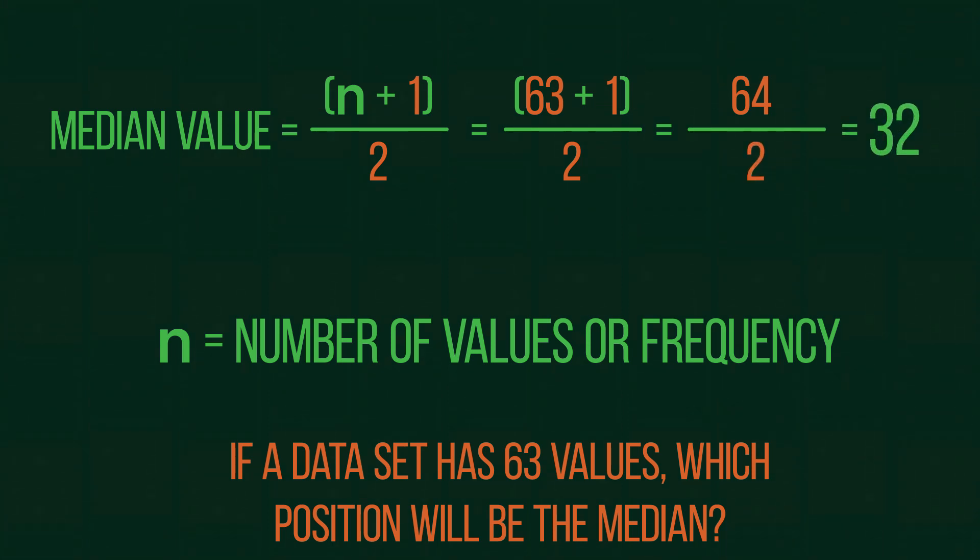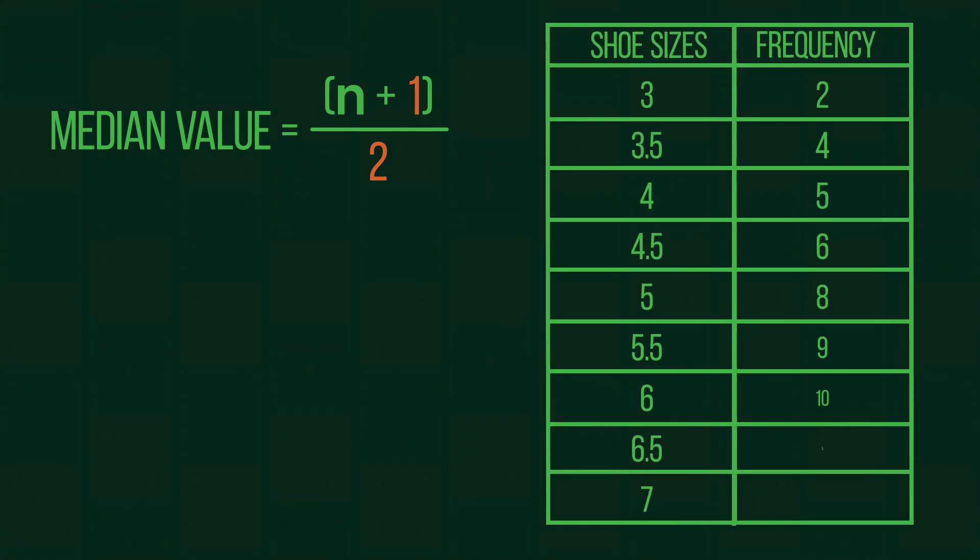Finding the median from a frequency table can be very simple using this equation. Consider this frequency table showing the data for shoe sizes purchased. By understanding that the frequency says that size 3 occurred 2 times, size 3.5 occurred 4 times, and so on, we can form a total number of shoes bought from the frequency column by adding these values. We now know that our data set contains 52 values.